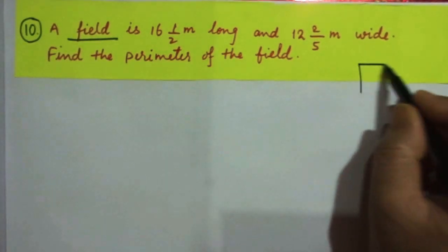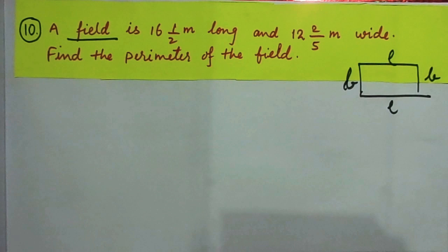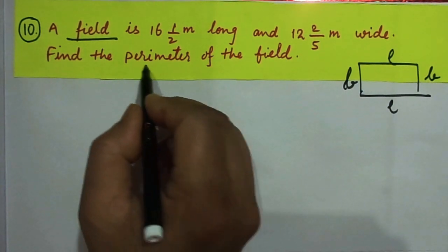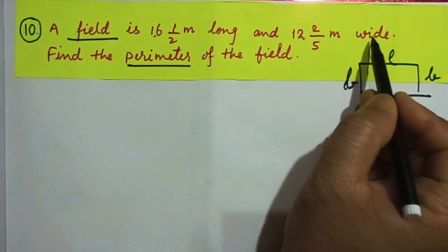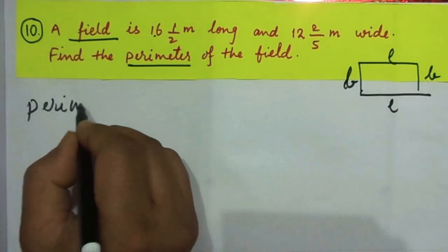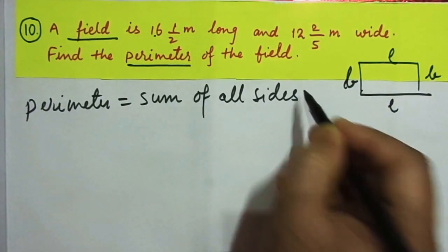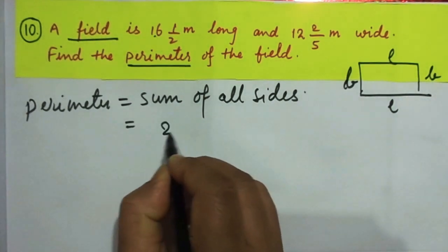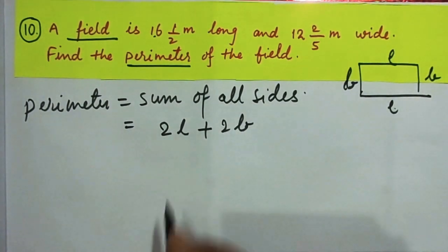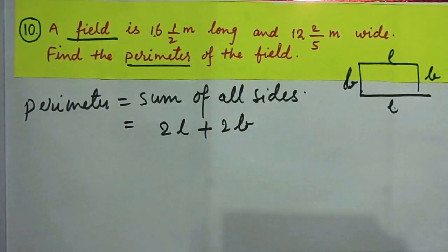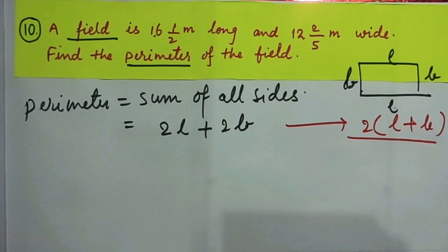Question 10: A field is a rectangle, and a rectangle has two lengths and two breadths. If they are asking about the perimeter of the field, they give you the length and the breadth — 'wide' means breadth. The perimeter equals the sum of all sides, which is 2l plus 2b, or 2(l + b).